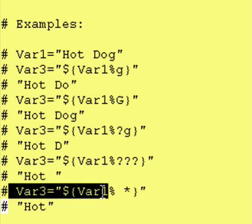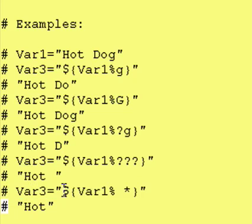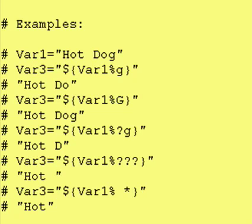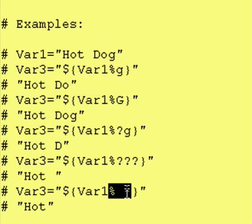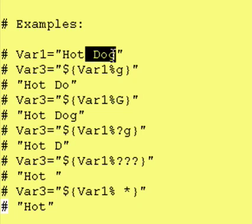The last example here: we have dollar sign, curly brace, var1, percent sign, space, asterisk, close curly brace. Breaking this down, we put hot dog right here, and then it says remove from the right-hand side, if you can, a space followed by anything or nothing. In our example, that matches a space followed by anything, so we are just left with the word hot.